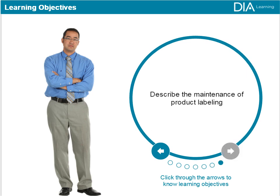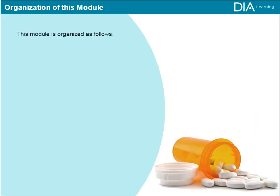Describe the maintenance of product labeling. This module is organized around the following major facets of product labeling. Lesson 1: Global Labeling — the Company Core Data Sheet.